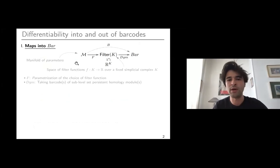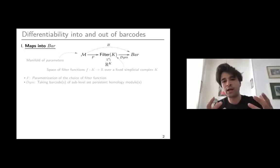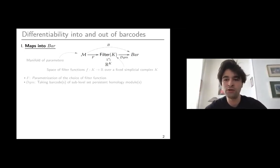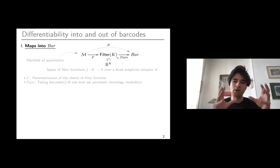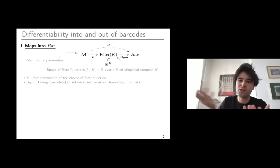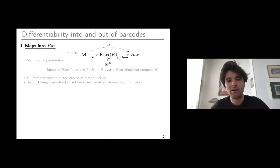Let me be a bit more precise. What do I mean by a map from a manifold to barcodes? You first should spot there is a simplicial complex K that is fixed. This space Filter K is a space of filter functions over K, so real value maps defined on a simplicial complex. The DGM map that goes to barcodes is the usual barcode associated to the ordinary sub-level set persistent homology module. The unusual part is what comes before. You have a manifold of parameters, a finite dimensional manifold, and for each parameter you're going to associate a filter function via this map f. It's a smooth selection of a filter function.